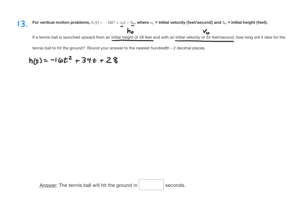So this is our equation, and then we're looking for how long it takes to hit the ground, and the ground has a height of 0. So let's just set this equation equal to 0. So we're going to be solving negative 16t squared plus 34t plus 28 equals 0.